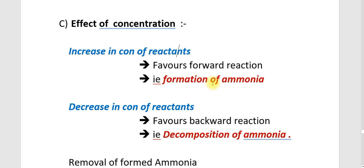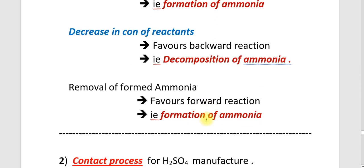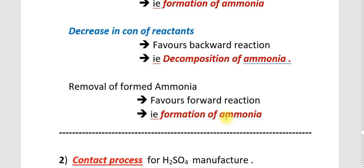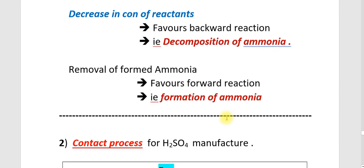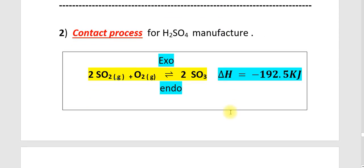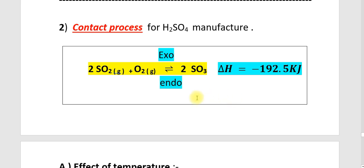The second industrial process is the Contact process, which is the manufacture of SO3. The reaction is: 2SO2 plus O2 gives a reversible reaction to form 2SO3. Delta H is negative, so the forward reaction is exothermic and the backward reaction is endothermic.